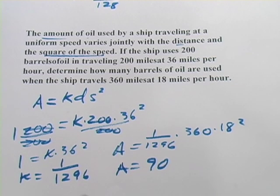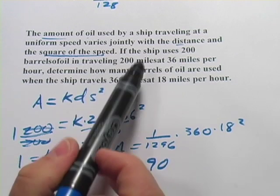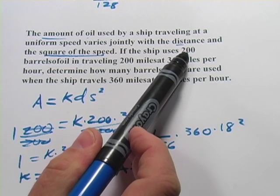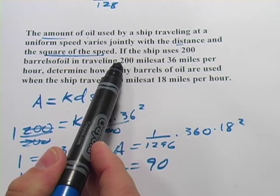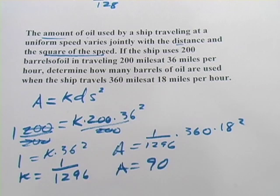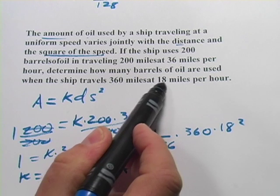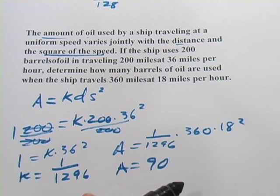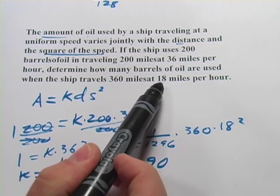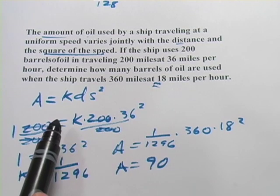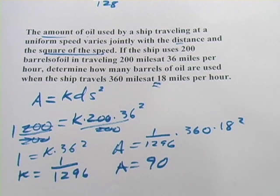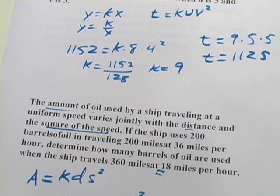And I do like to look back and see if this could possibly make sense. In the first one, the ship used 200 barrels of oil going 200 miles at 36 miles per hour. And then when it travels further than that, but at a much slower rate, half the speed, it uses only 90 barrels of oil. So I guess what that's showing is that this is a much more fuel efficient speed to travel at. And that seems to make sense. Let's try one more.